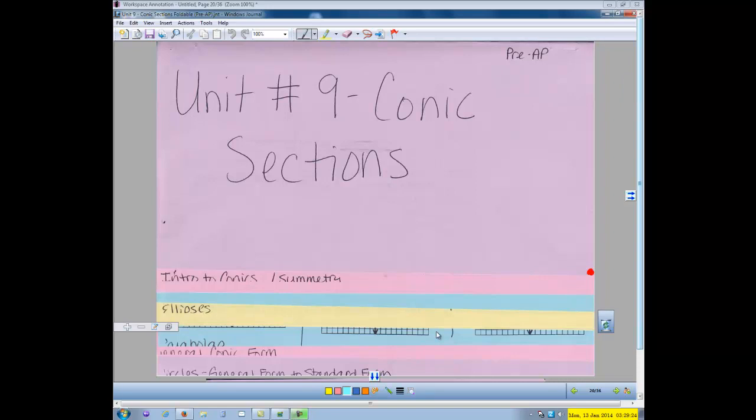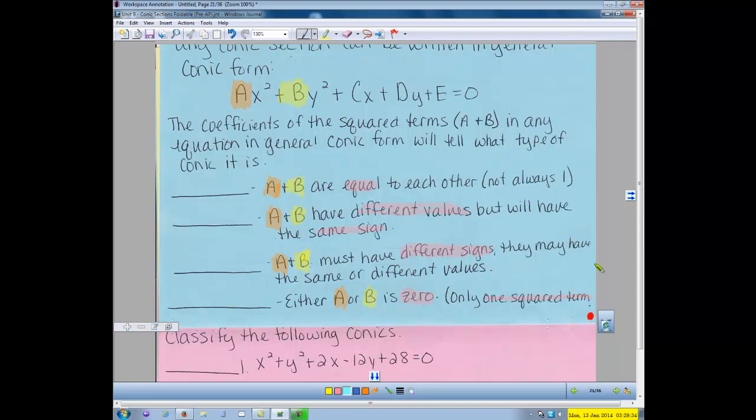We continue Unit 9 conic sections with flaps 6 and 7 in our foldable. Any conic section can be written in general conic form, ax squared plus by squared plus cx plus dy plus e equals zero.